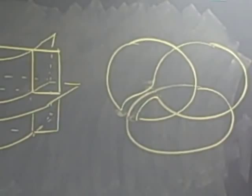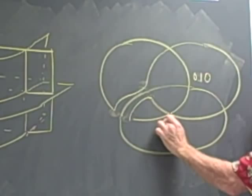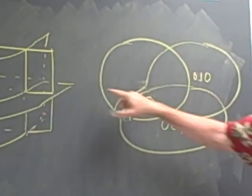and connect x to y like that. So this is the point zero, one, zero. This is the point zero, zero, one. And this boundary here is the same boundary as we have over here. So this is what happens under the boundary map.